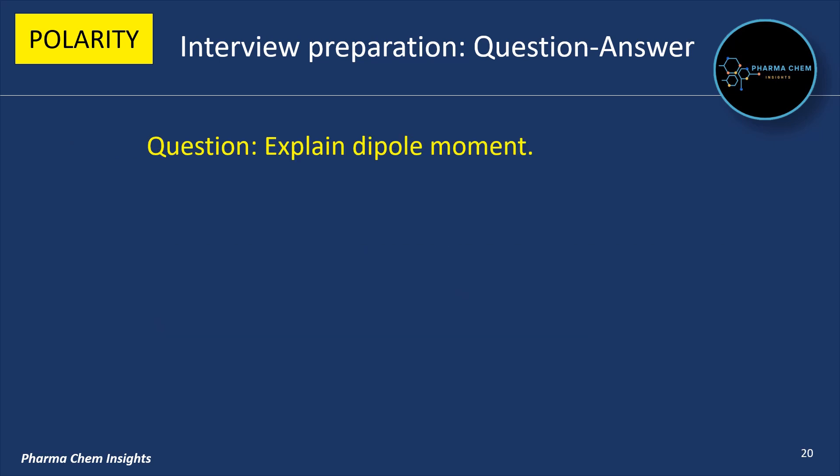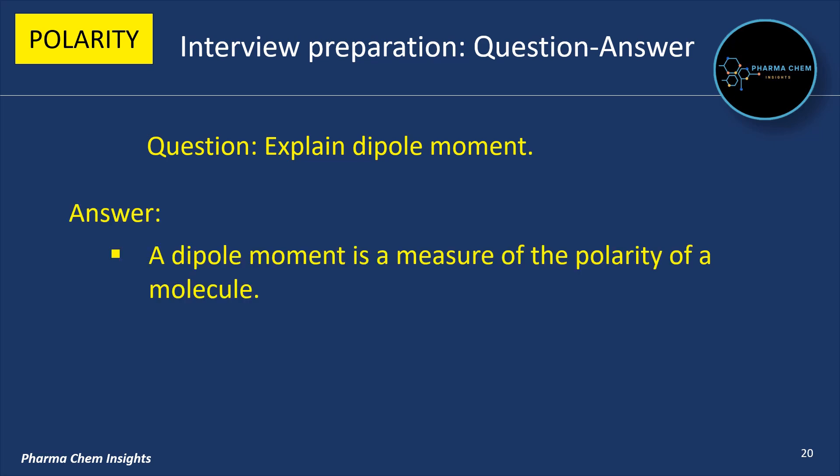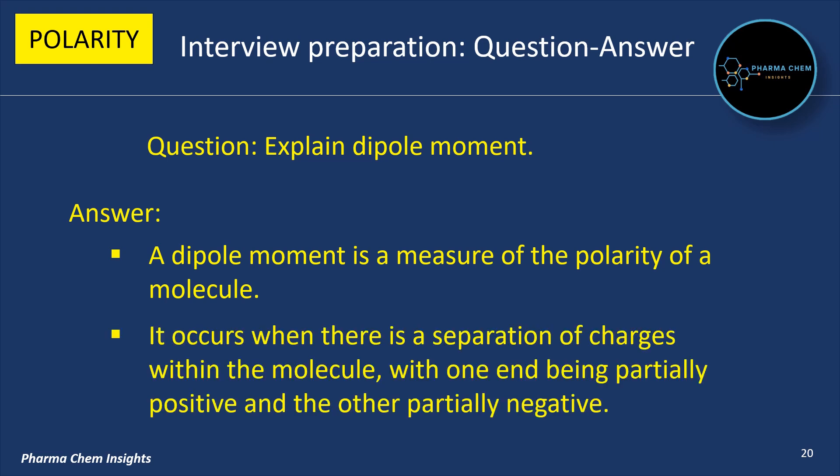Next question: explain dipole moment. Answer: a dipole moment is a measure of the polarity of a molecule. It occurs when there is a separation of charges within the molecule, with one end being partially positive and the other partially negative.